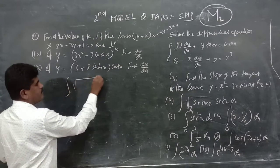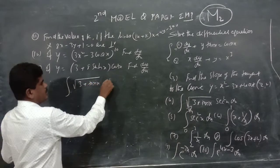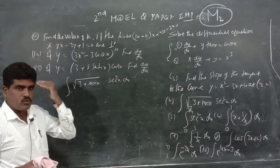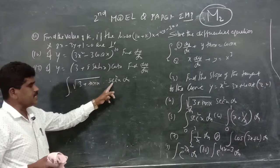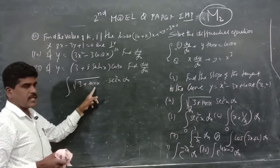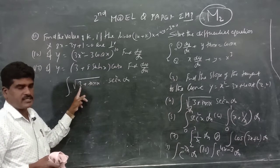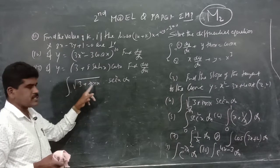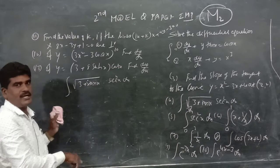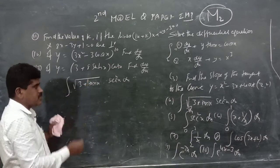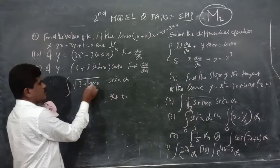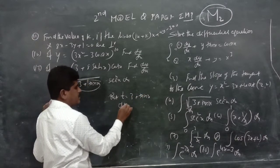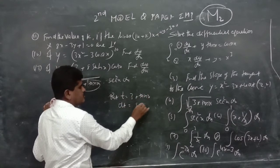Fourth problem: evaluate the integral of √(3 plus tan x) times sec²x dx. Use the substitution t equals √(3 plus tan x), which is a function of x. Differentiating, dt/dx equals sec²x, so dt equals sec²x dx. The integral becomes the integral of √t dt.